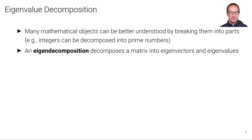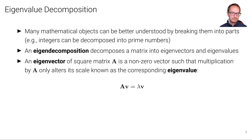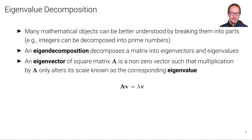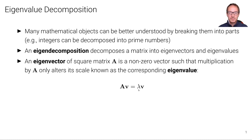An eigendecomposition decomposes a matrix into so-called eigenvectors and eigenvalues. An eigenvector of a square matrix A is a non-zero vector such that multiplication by A only alters its scale, and the scale is known as the corresponding eigenvalue. So if there is a vector V such that multiplying it by matrix A gives a scaled version of V, then V is an eigenvector and the scaling factor is the eigenvalue. We don't change the direction of the vector, only its norm.